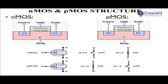The gate terminal is the controlling terminal of the MOS transistor, which acts as a switch. In an NMOS transistor, if the gate is 0 the switch is off; if gate equals 1 the switch is on. In a PMOS transistor, the inverse operation takes place: gate equal to 0 turns the switch on, and gate equal to 1 turns the switch off.